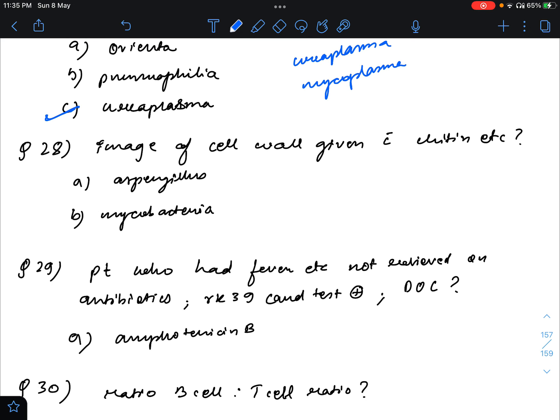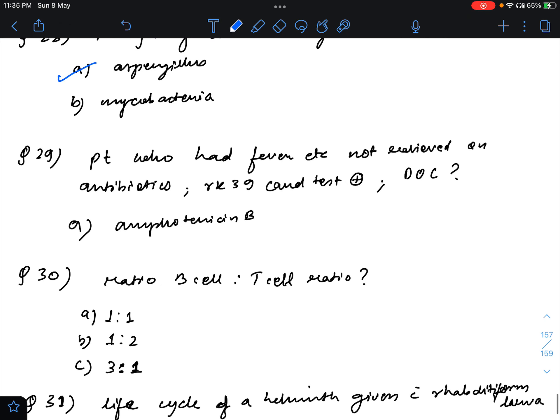Question 28: image of septate was given with chitin and other structures like arachnoid, etc. So for that, basically, we have to select a fungi and the answer to that will be Aspergillus. Question 29 is patient who had fever and was not responding to antibiotics. Antibiotics were tried but it was not responding to that and RK39 card test is positive. So this means it is Leishmania. Therefore, we will use amphotericin B.